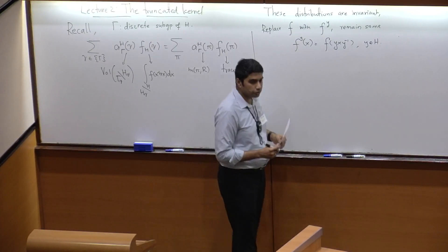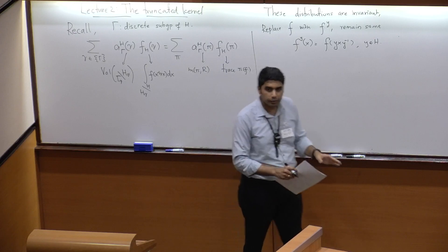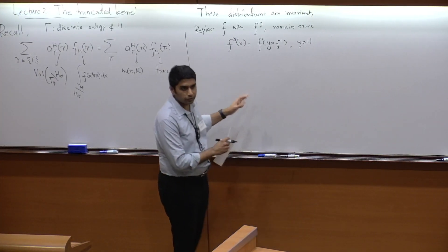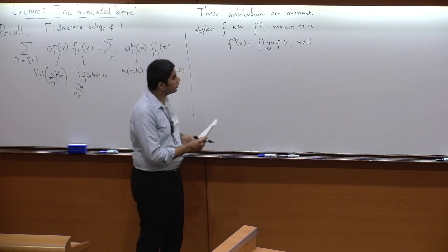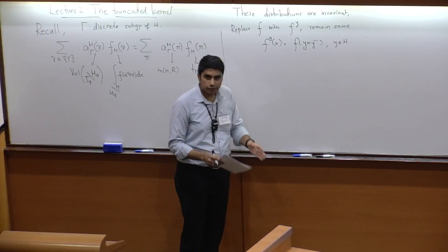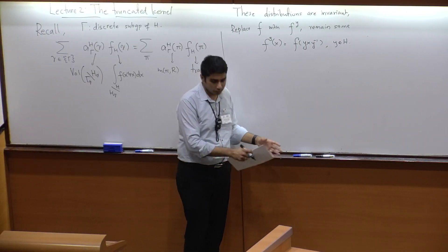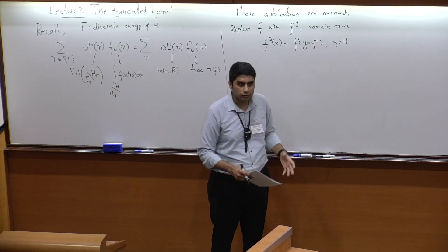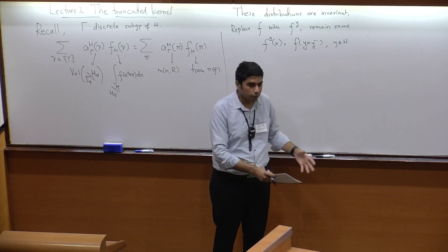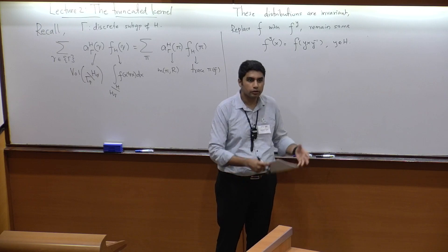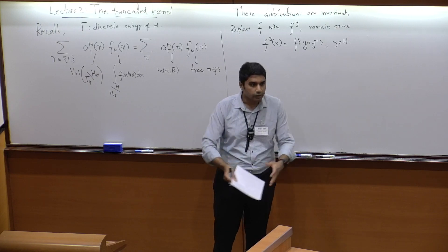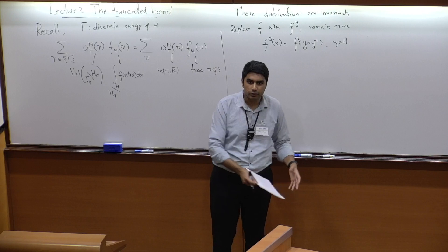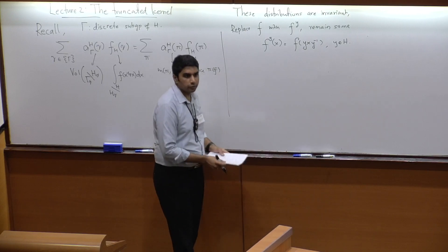Yesterday we made all the preparations to define the truncated kernel. Now let's define it. From that definition, we'll prove that it's absolutely convergent, state a few properties about the kernel, and then make the geometric expansion as well as the spectral expansion out of that truncated kernel expression.